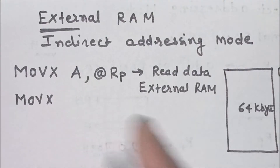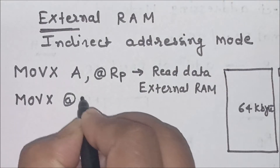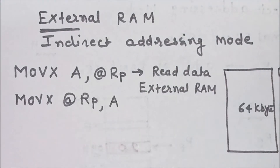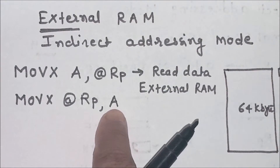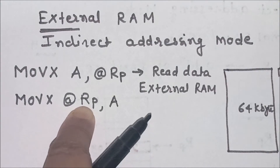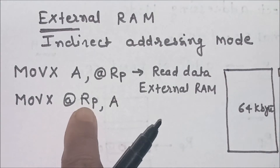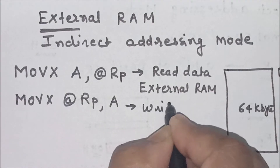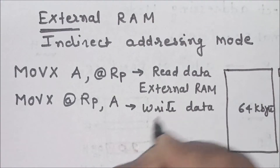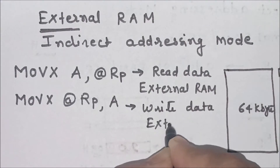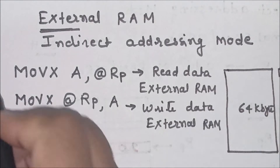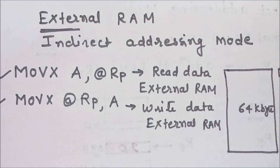We read data from external RAM memory pointed by register RP (that is R0 or R1) and store that data in the accumulator. Similarly, we can use MOVX instruction to write data to external RAM. The contents of the accumulator will be stored at the external RAM memory address held in RP. So you can read or write data to external RAM memory using these instructions.